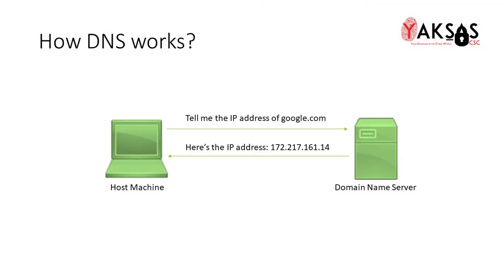First, let's understand how a typical DNS request works. A host machine uses DNS to translate a domain name to its IP address. For example, in this figure, the host machine is asking the domain name server for the IP address of google.com. Upon receiving this request, the domain name server replies back with the IP address of google.com. This is how DNS typically works.